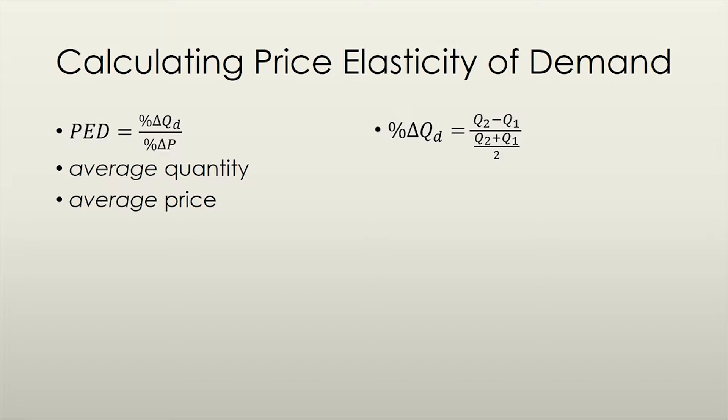To calculate the percentage change in quantity demanded, we subtract the old quantity from the new quantity, or Q2 minus Q1, and divide that by the average of the two quantities. This may be a bit confusing, and to be honest, I don't find it super intuitive either, but this is the way it's taught.